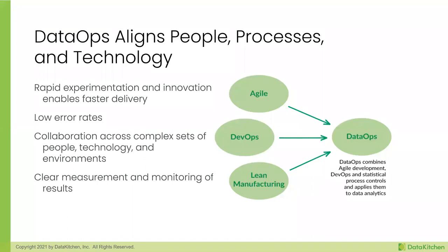Third is how do you improve collaboration with your team so there's less bureaucracy and you get more time to do fun stuff? And finally, how can you show that your team is awesome? DataOps is really about aligning people, process, and technology — bringing rapid experimentation, low error rates, fast cycle time to deploy, and clear measurement and monitoring.